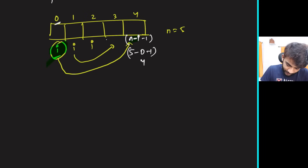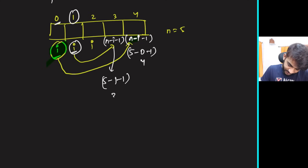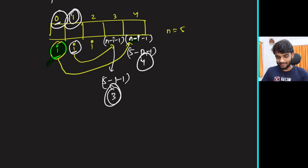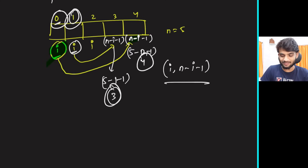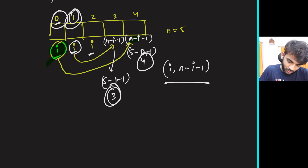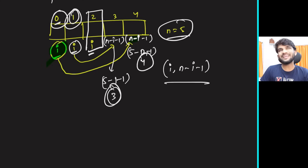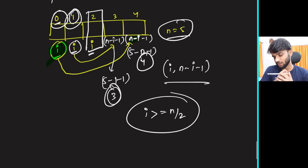So for index i, we swap array[i] with array[n-i-1]. The base case is: at any moment i crosses n/2, stop — because once you cross the middle there's no need to swap further.